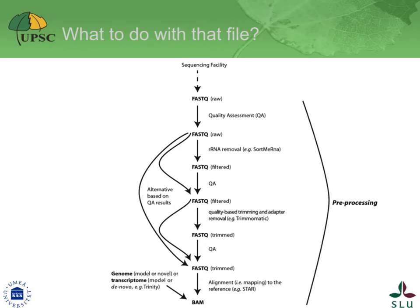This process is called preprocessing. In the figure, you can see the flow for the RNA-seq data preprocessing. It consists of a number of rounds of data cleaning, namely ribosomal RNA filtering and quality-based trimming and adapter removal, each flanked by quality assessment steps. The final results are so-called clean reads that will be used for processing. We will, in the next slide, focus on these cleaning and QA steps.